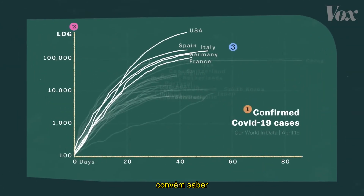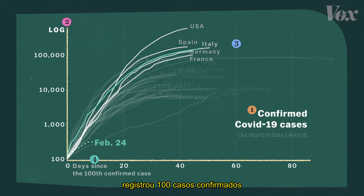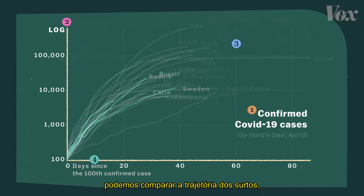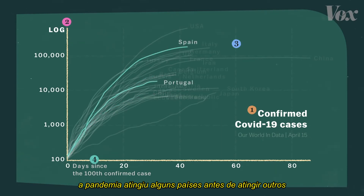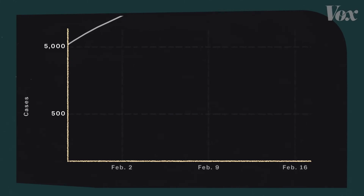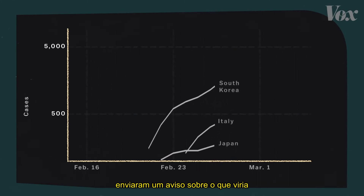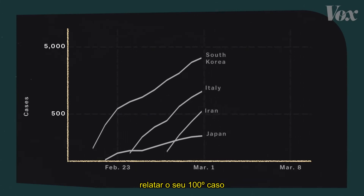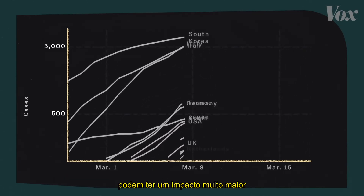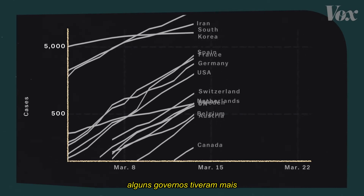And the last thing to know about our chart is that the x-axis doesn't plot time by the date, but by the number of days since the country recorded 100 confirmed cases. For Italy, that was February 24th. For Turkey, March 19th. When they're all layered on top of each other, it allows us to compare the trajectory of the outbreaks. But it tends to obscure the fact that the pandemic hit some countries before it hit others. The world watched as tens of thousands of cases appeared in China, then big outbreaks in South Korea, Italy, and Iran sent a message about what was to come. Two weeks after South Korea reported its 100th case, the United States did the same. In a situation where actions taken early can have a much bigger impact than actions taken later, time is a crucial factor. And we have to remember that some governments had more time than others.